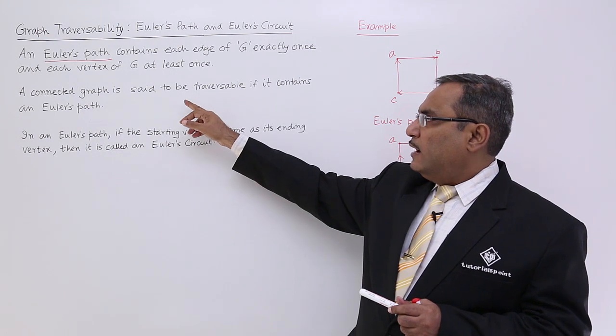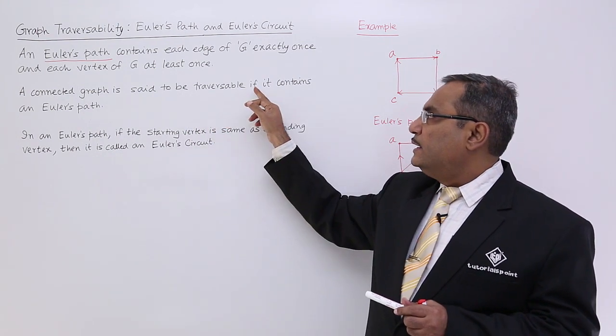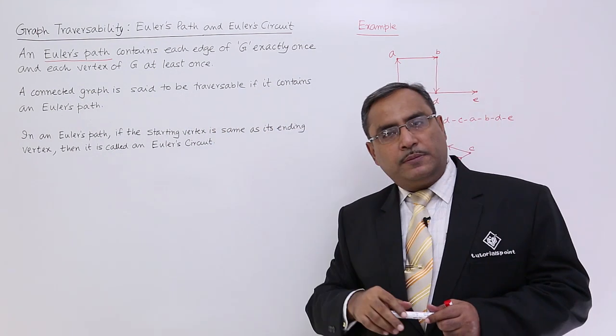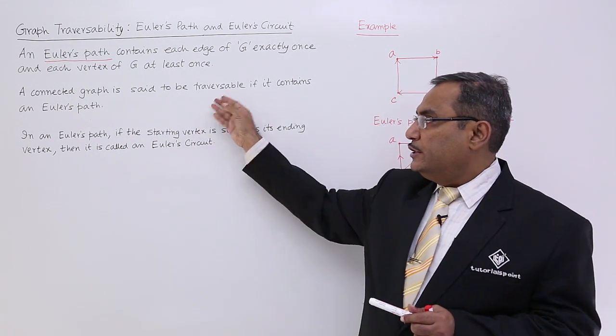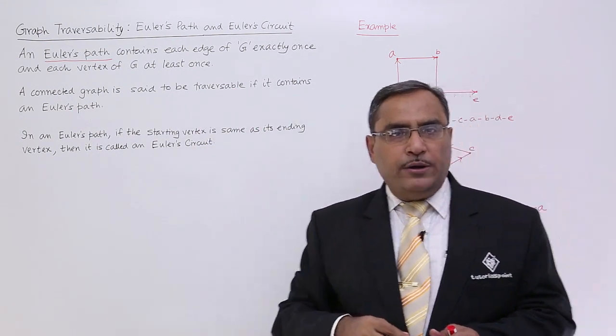A connected graph is said to be traversable if it contains an Euler path. So let me go for the Euler's path at first.